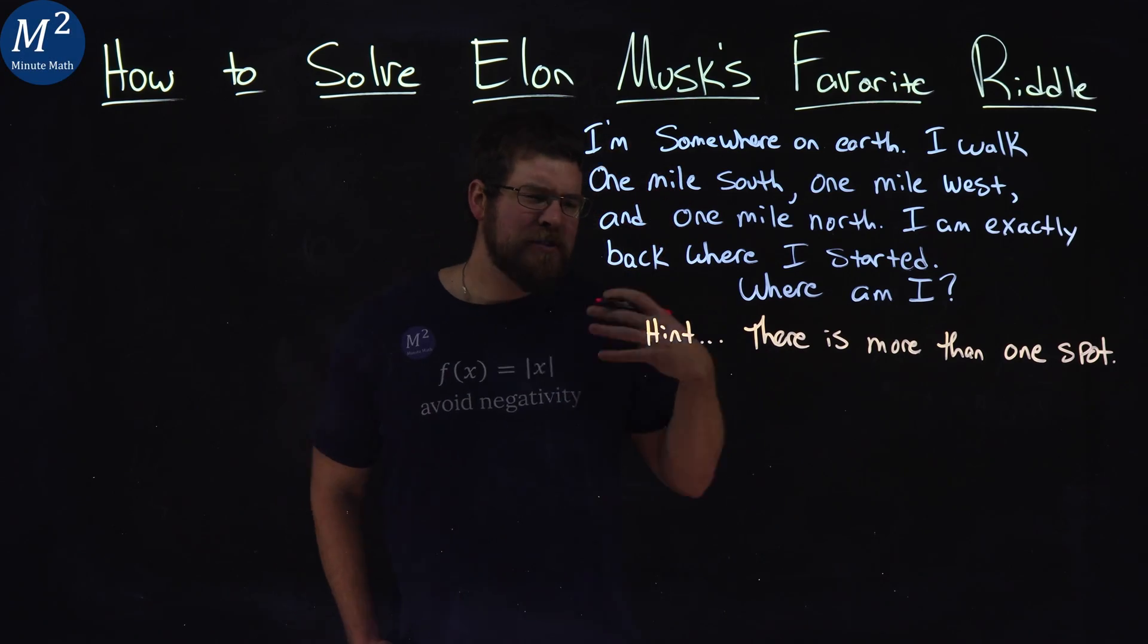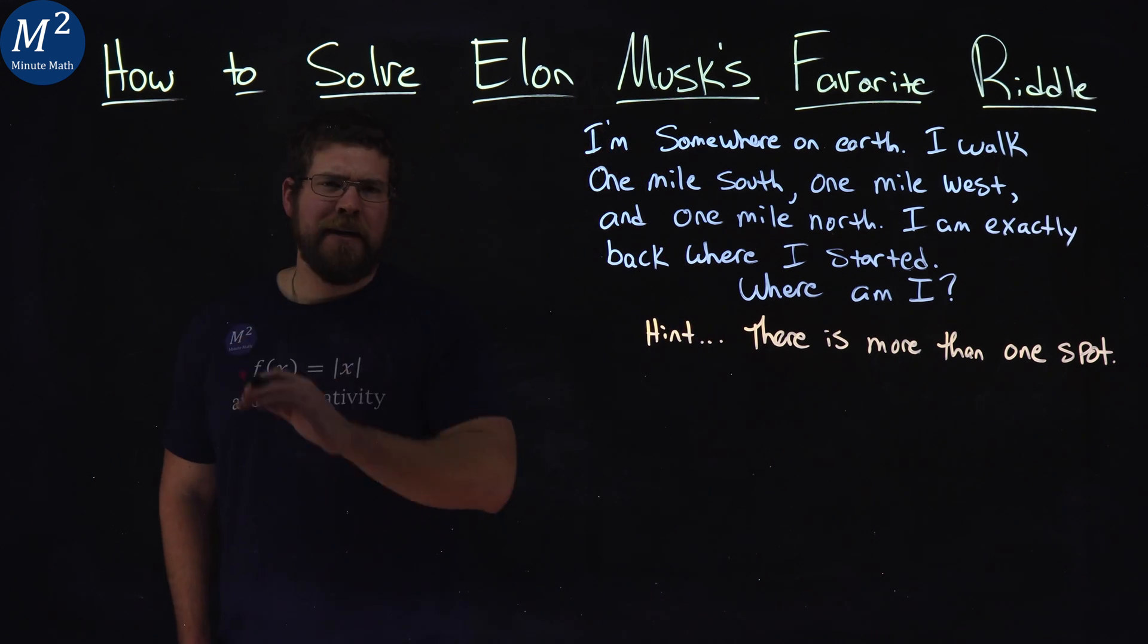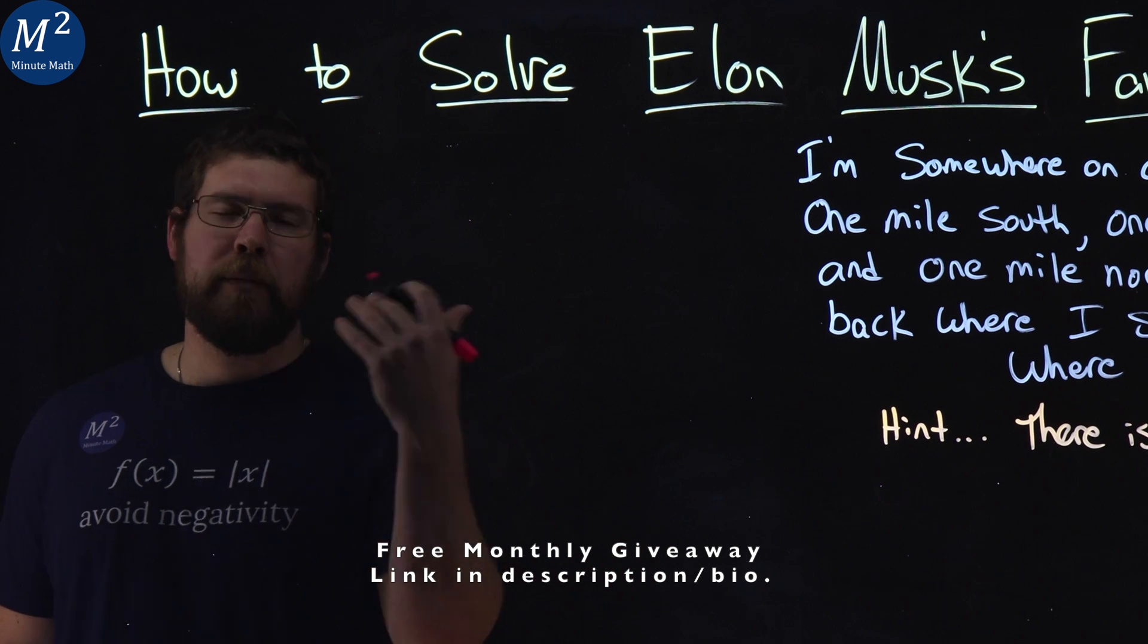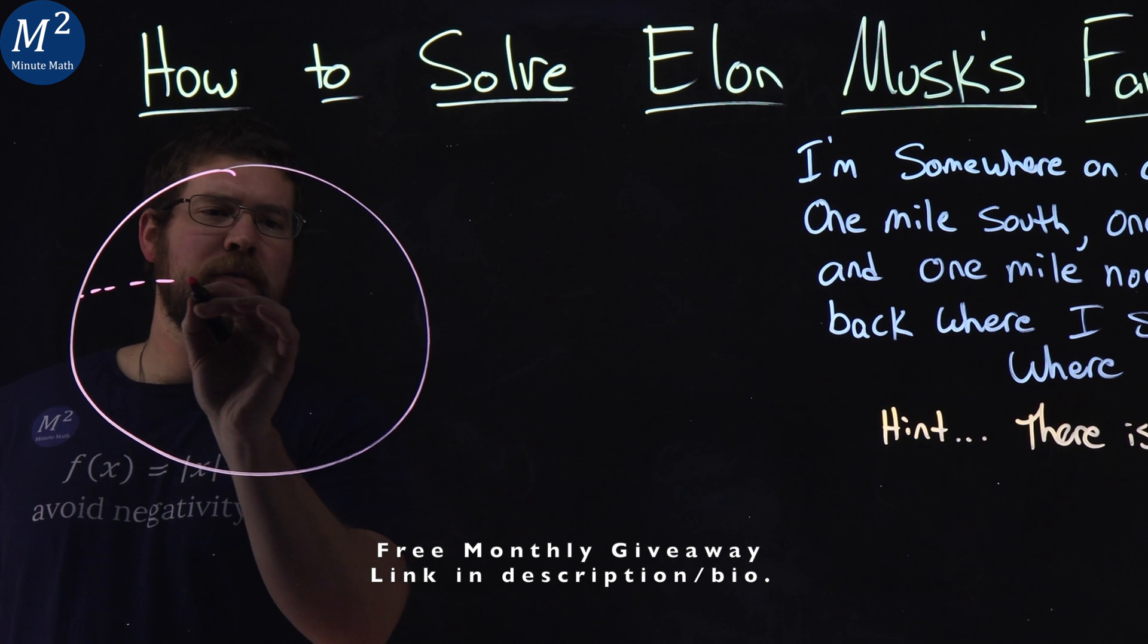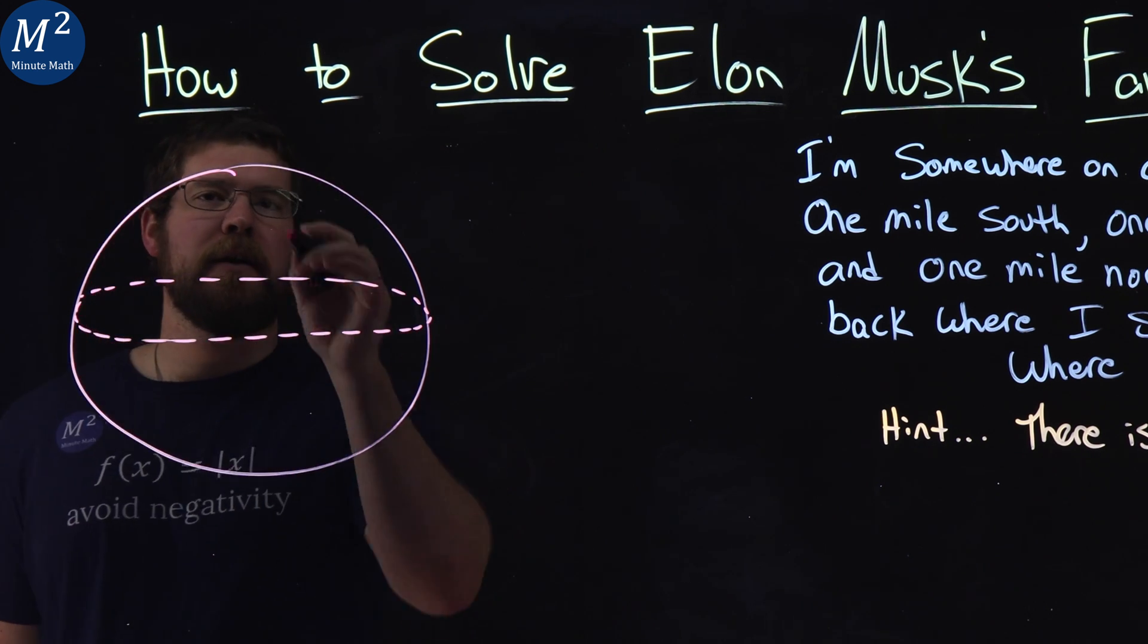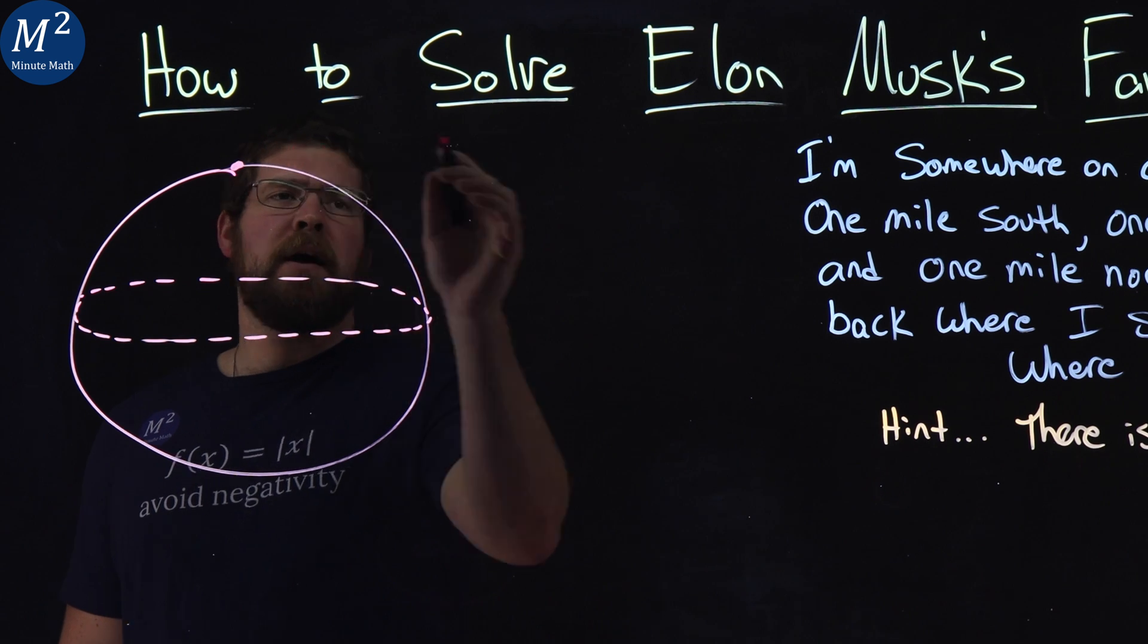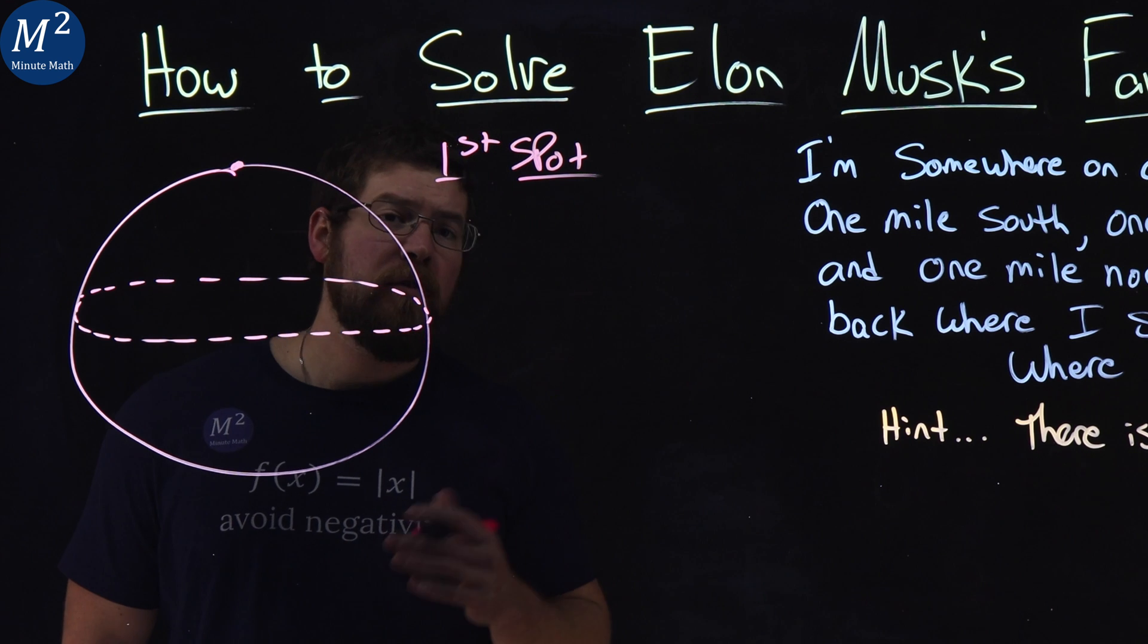So this riddle, we'll start first with the North Pole actually. I'm drawing a globe here, and don't judge my spheres. Let's say we have a perfect sphere for a globe for the purposes of this riddle. We've got a globe, we've got an equator here, and we have a spot up north. Well, that spot up north, the first spot, is the North Pole.